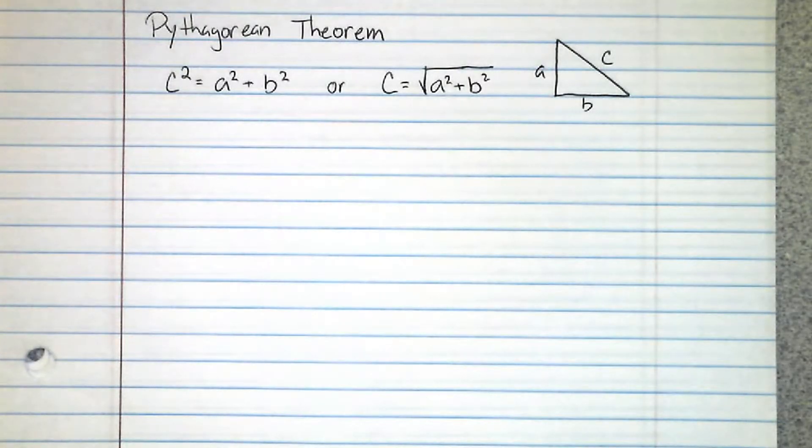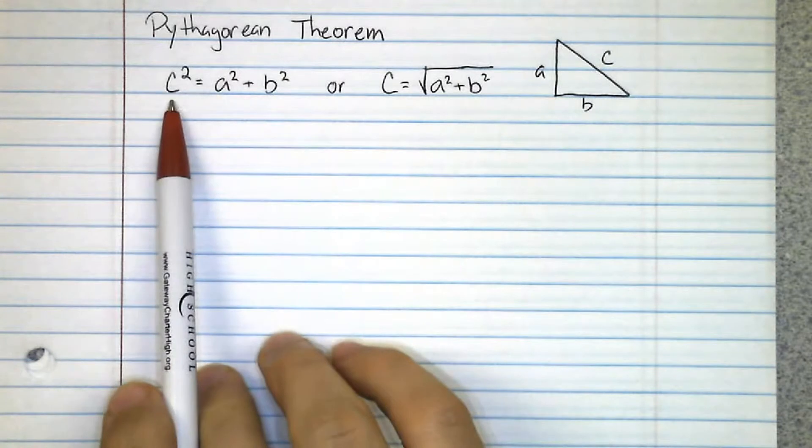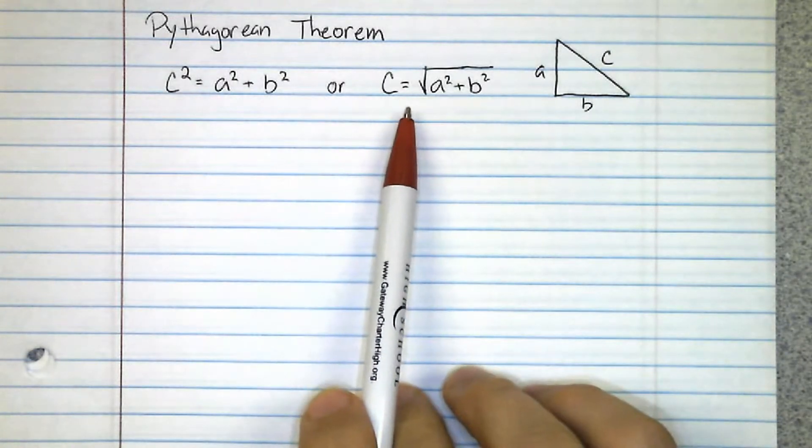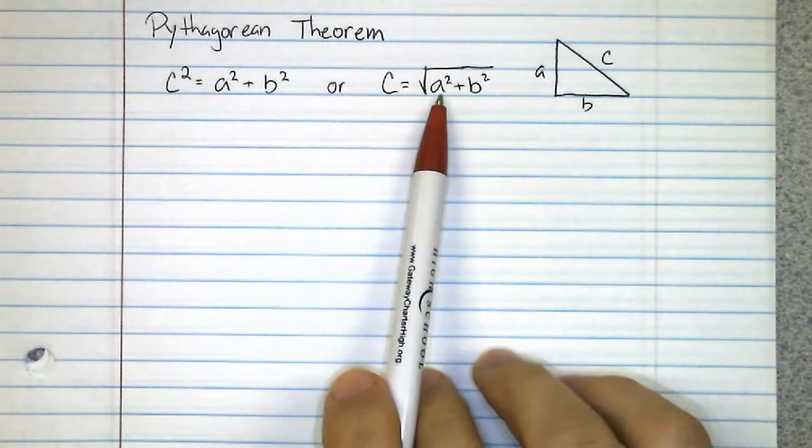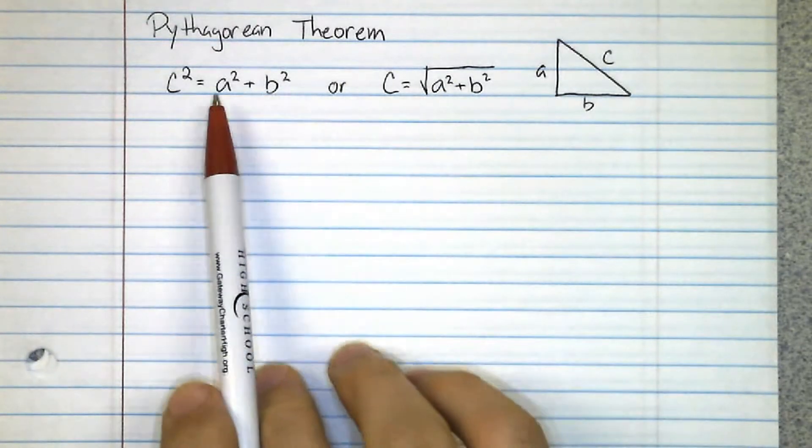Now this is also a good time to review the Pythagorean theorem. Remember the Pythagorean theorem: a squared plus b squared equals c squared, or some people like to remember it as c equals the square root of a squared plus b squared.